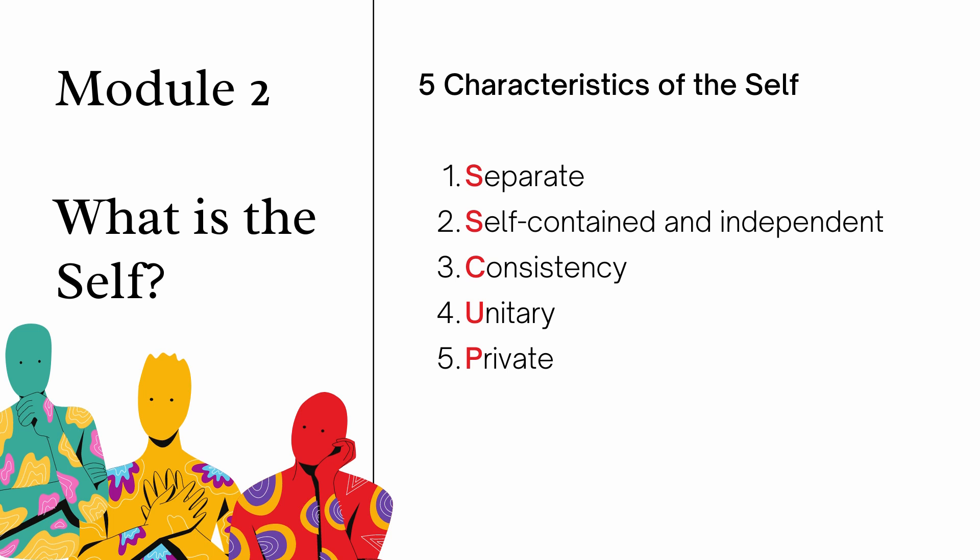Another thing: the self is separate because one person cannot be another person. For example, Juan dela Cruz cannot be Pedro; Juan dela Cruz cannot be Mario, because there is only one Juan dela Cruz. This is also a good reminder for us not to compare ourselves with other people, because at the end of the day there is no other person in the world like you.